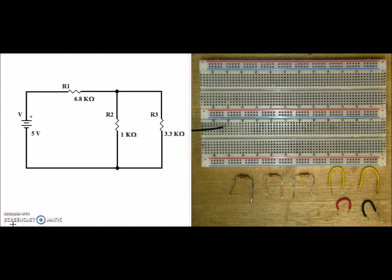Now that we've identified that this is truly a series parallel circuit, let's go ahead and collect our components. I have an R1 of 6.8k, an R2 of 1k, and an R3 of 3.3k.